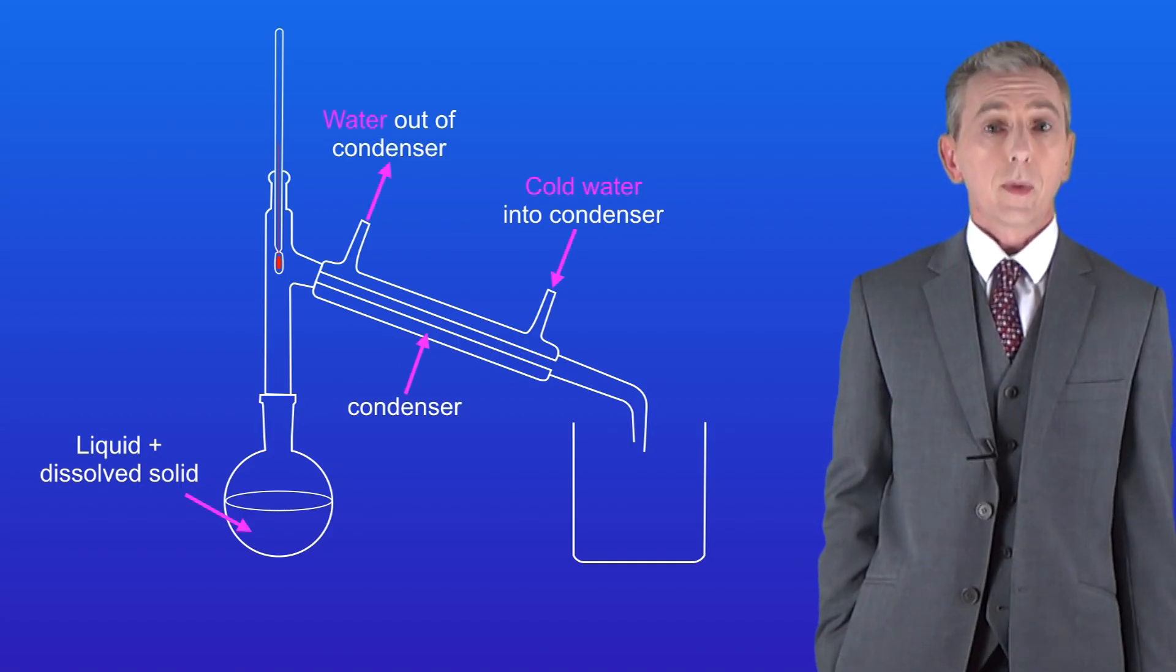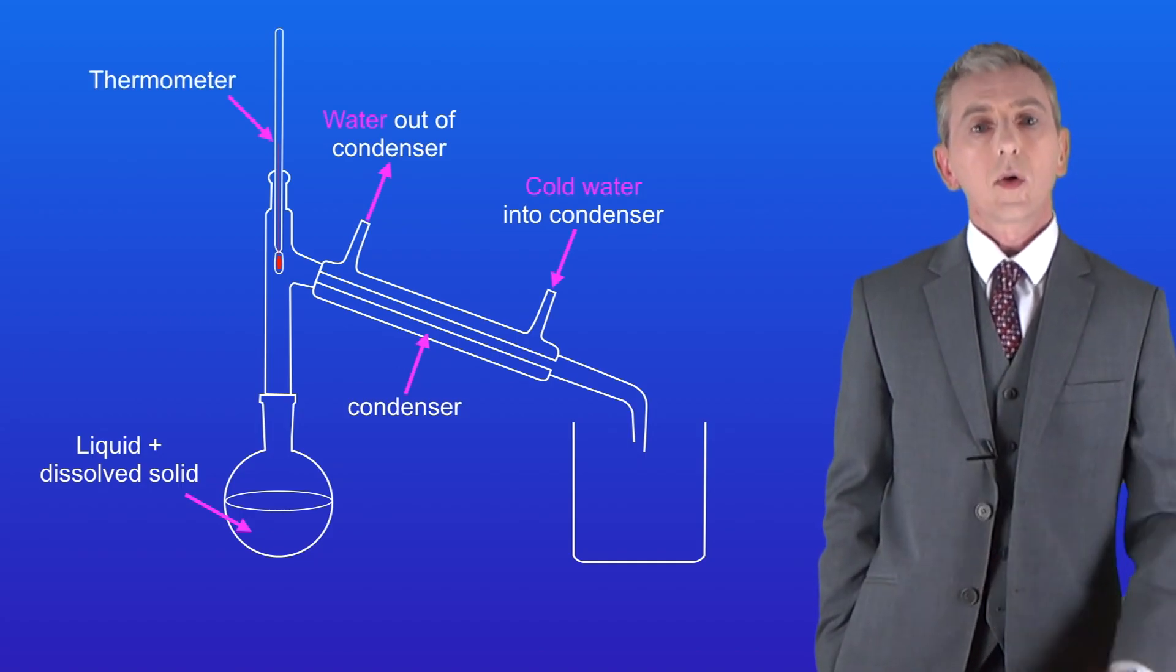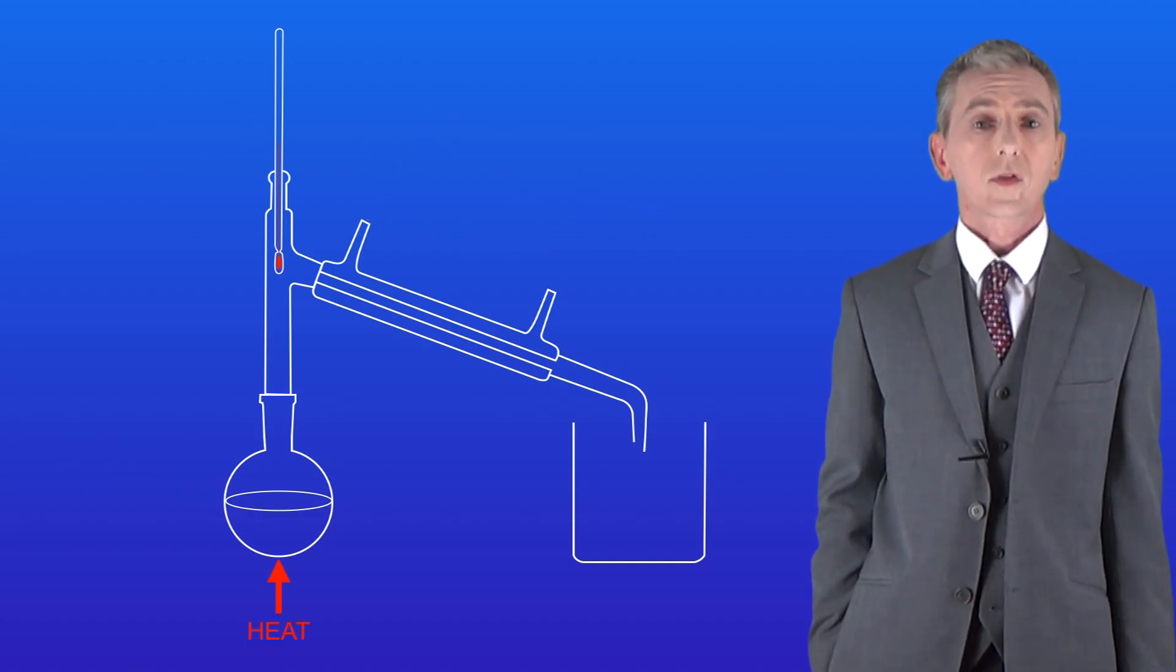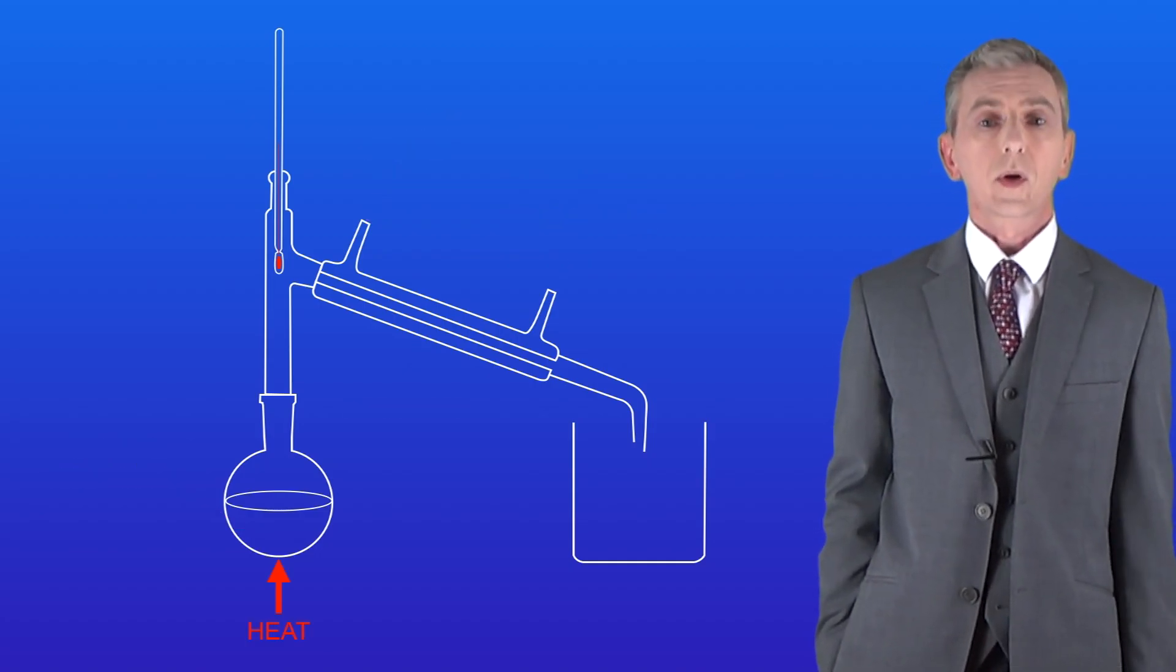We've also got a thermometer as part of the apparatus here. So let's see how this works. We start by heating our solution, for example by using a Bunsen burner.